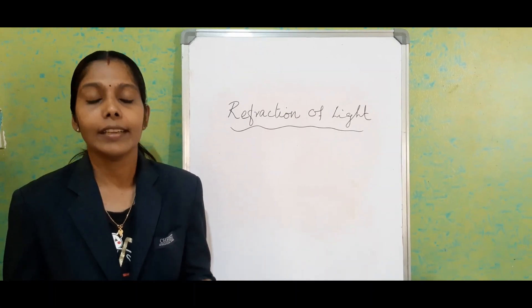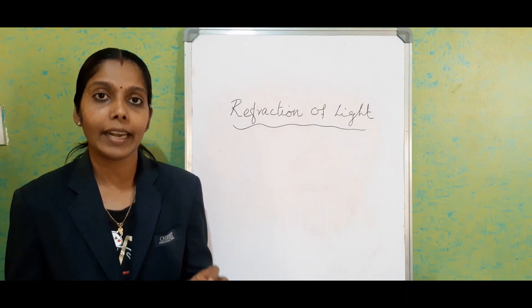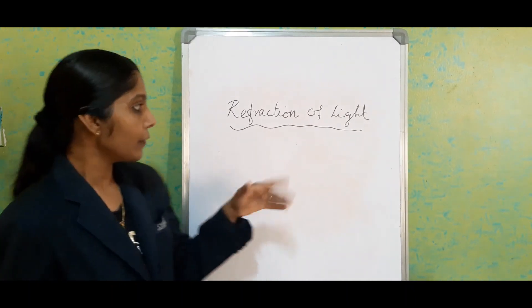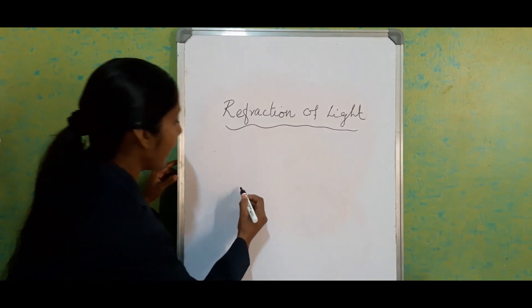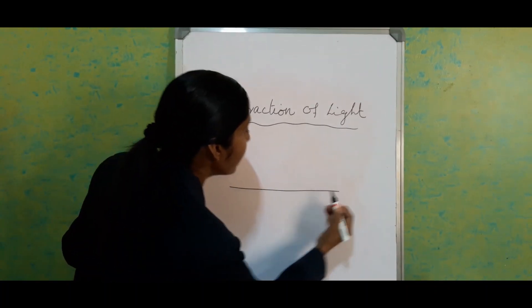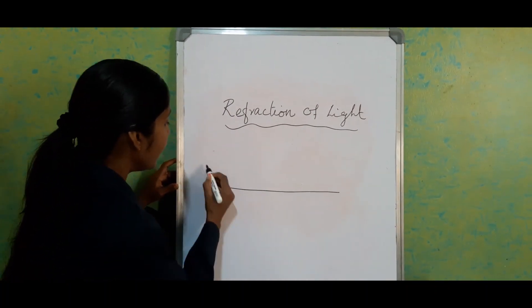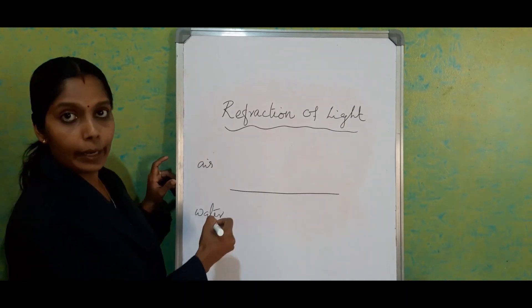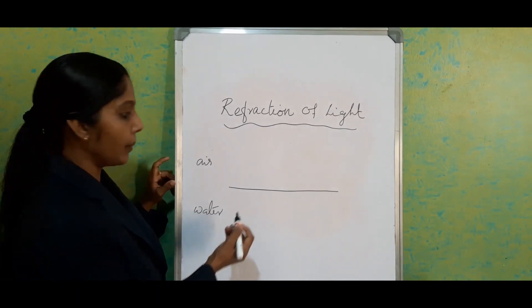Today I am here with a small instrument that everyone can show in the classroom or at home. First we will see what happens when the light ray travels from one medium to another medium. Consider this as air and this as water. Air is a rarer medium and water is a denser medium.